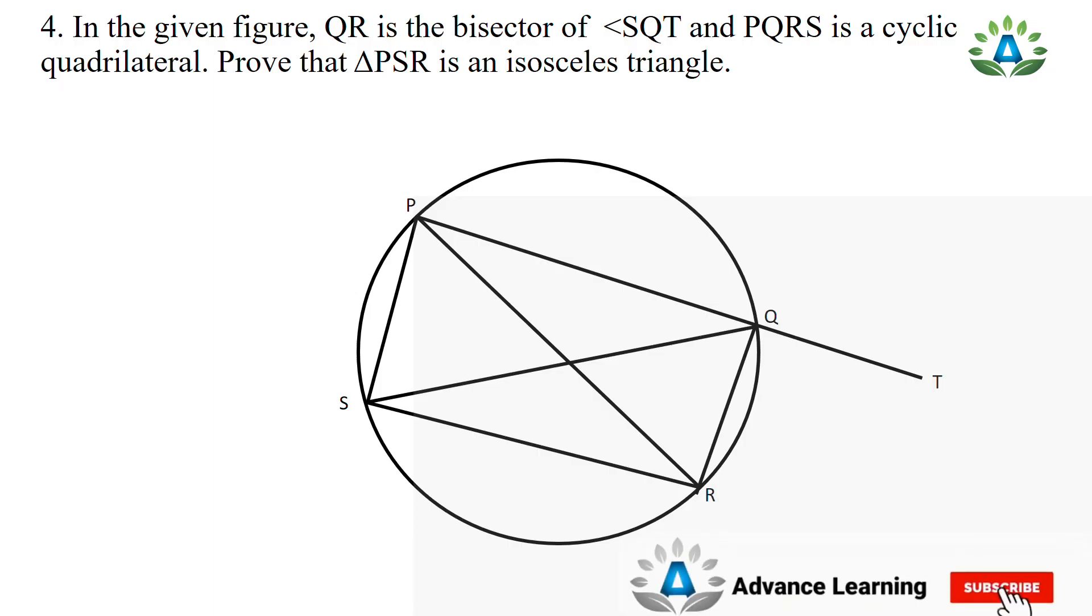Hello everyone, today I'm back with another question. In the given figure, QR is the bisector of angle SQT and PQRS is a cyclic quadrilateral. Prove that triangle PSR is an isosceles triangle.